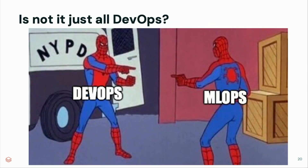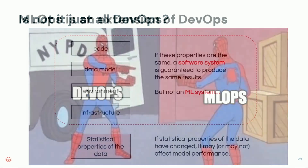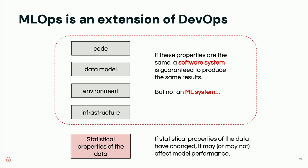But isn't this just DevOps? MLOps is actually an extension of DevOps. For any software engineering system, if the code, data, model, environment, and infrastructure are the same, the results are guaranteed to be the same. But machine learning has one extra concept: the statistical properties of data. If those change — even if everything else hasn't — your whole system is broken. That's why you need extra tools to make sure everything is working as expected.